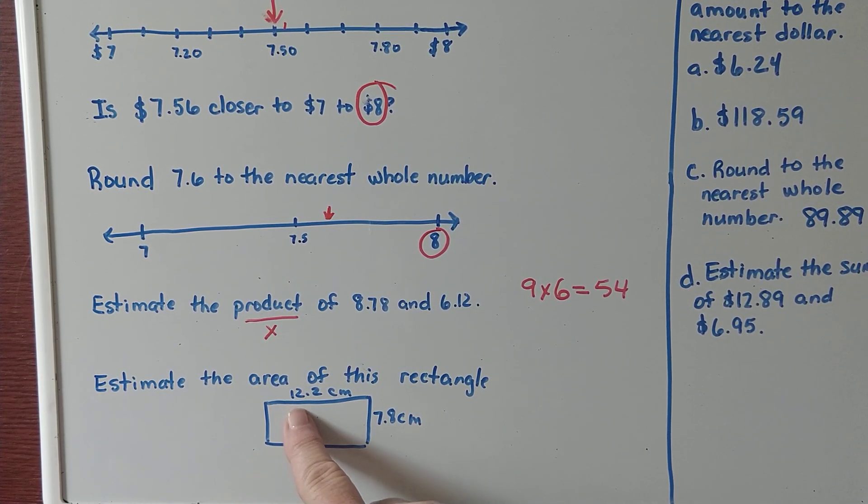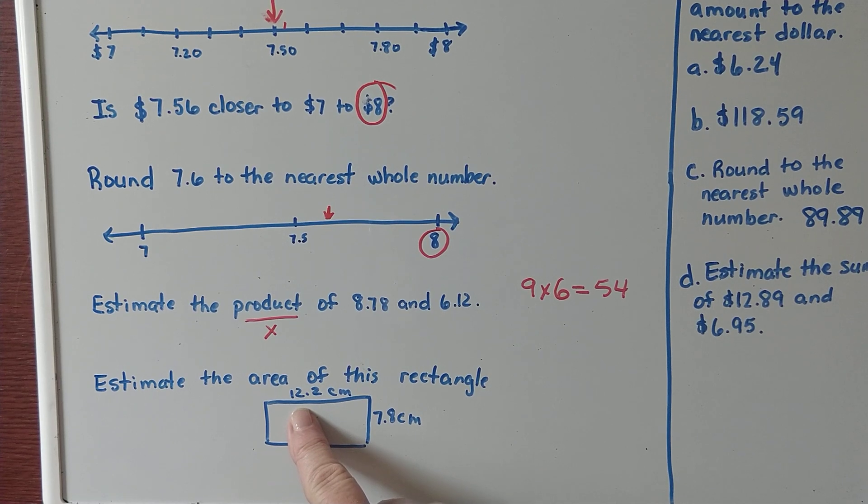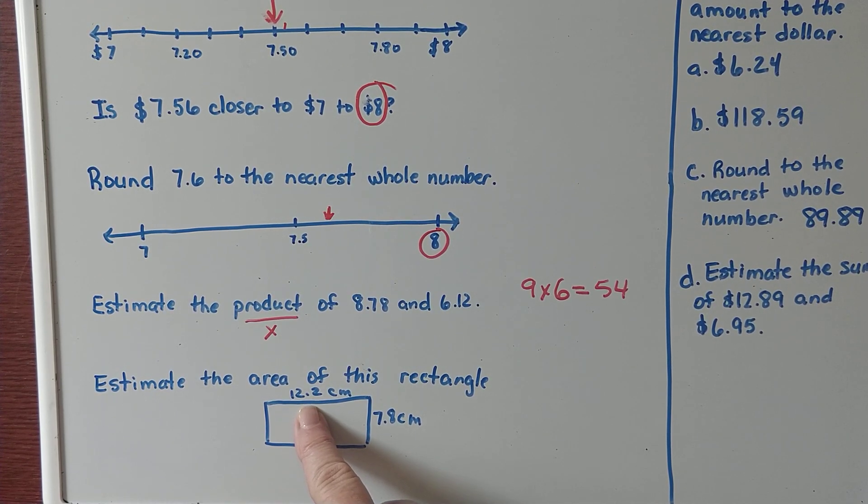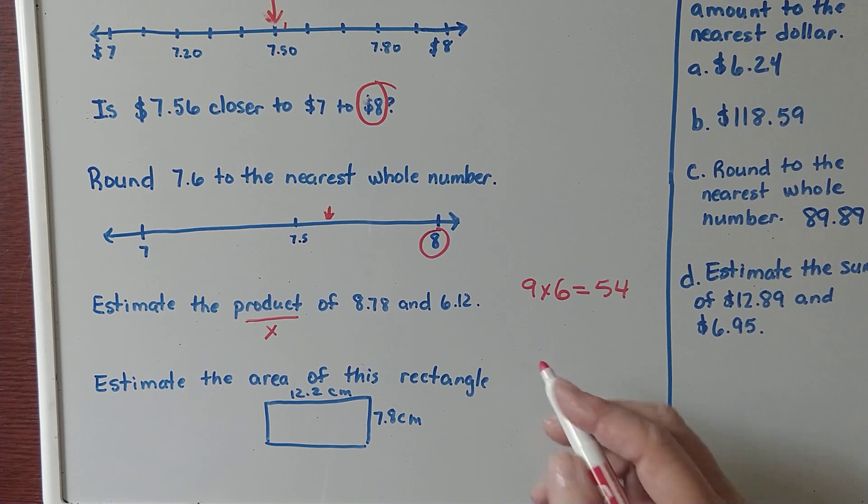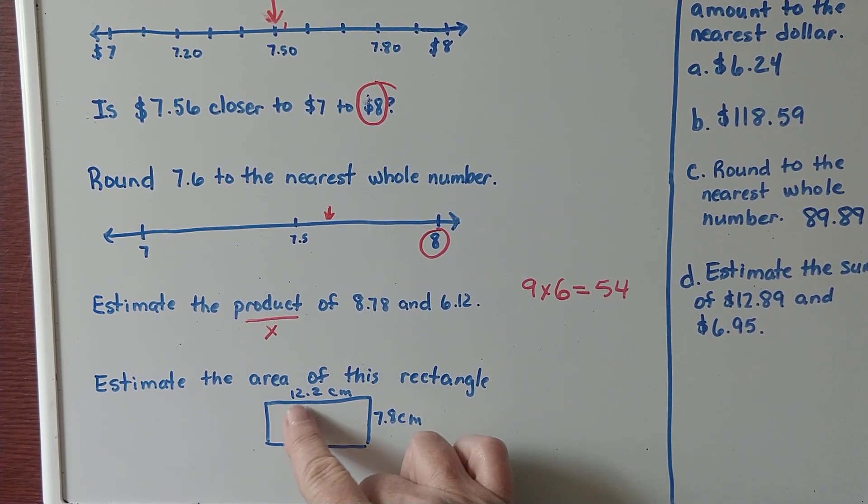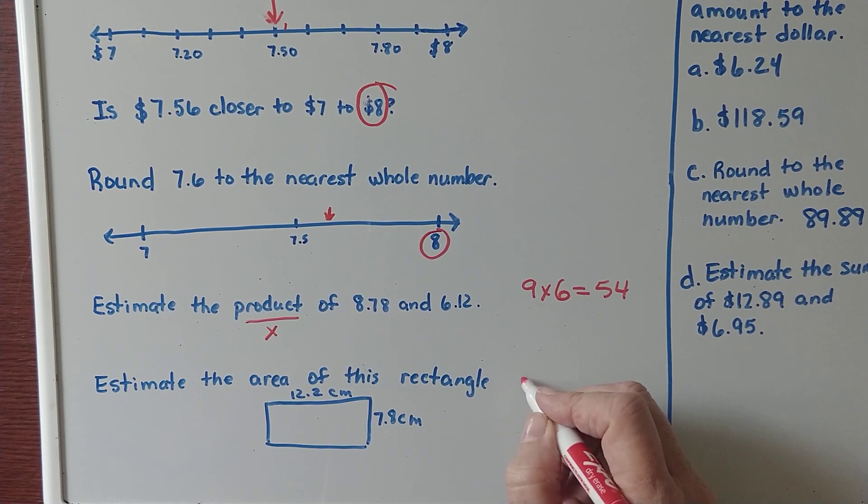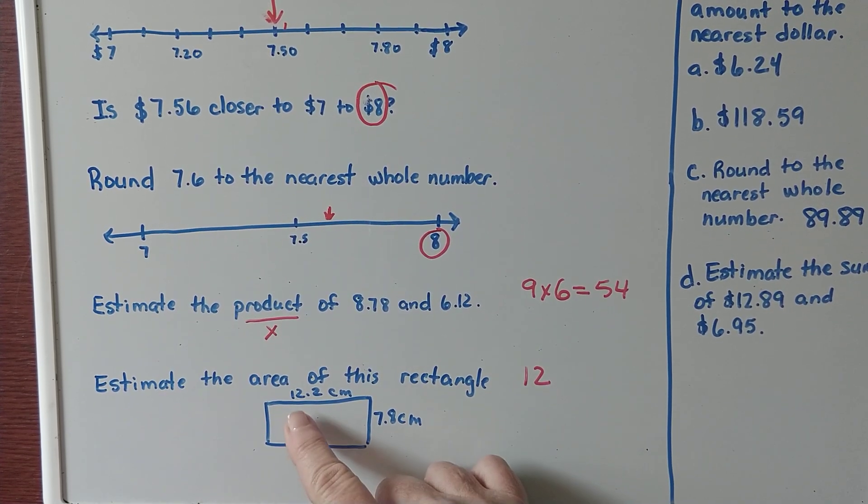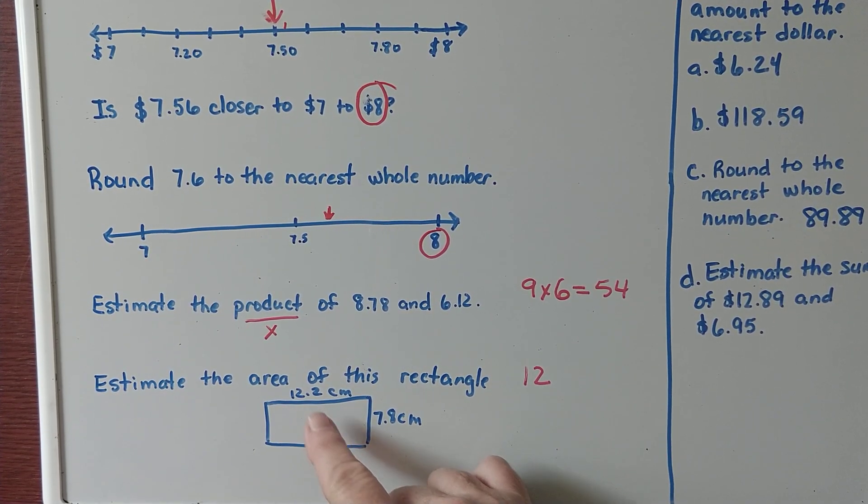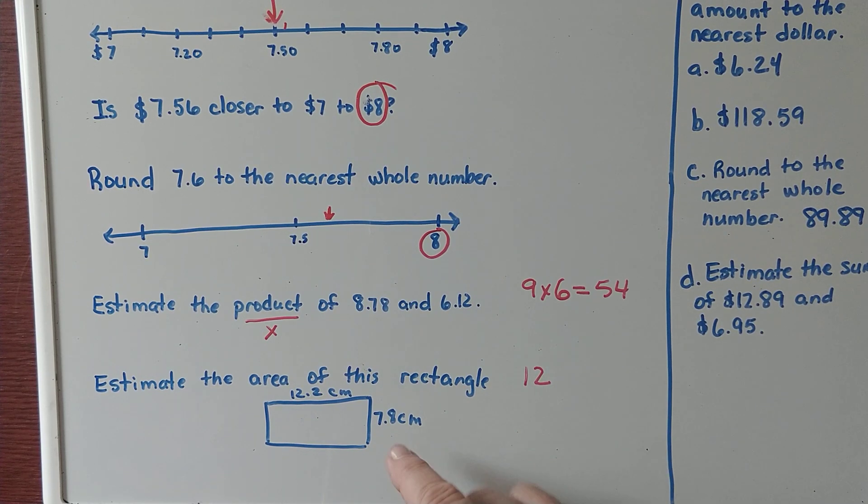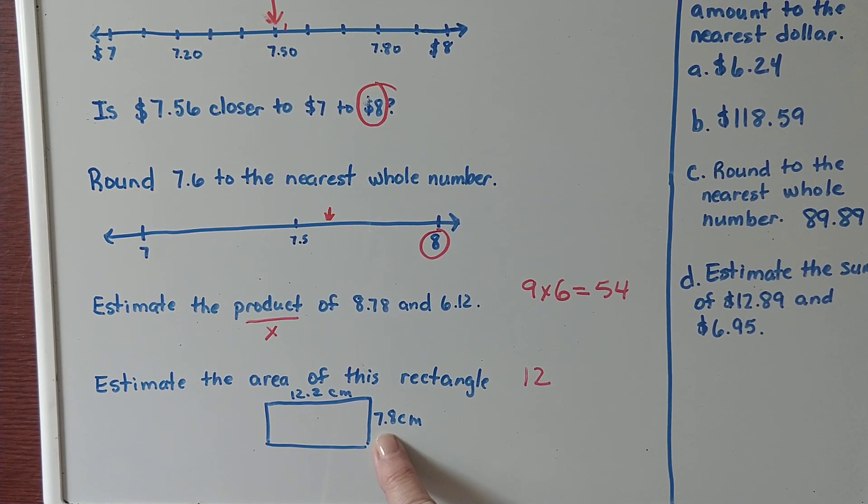We are going to round 12 and 2 tenths centimeters to the nearest whole number. Would it be closer to 12 or 13? 12, because it isn't at 12 and 5 tenths yet. What about 7 and 8 tenths?